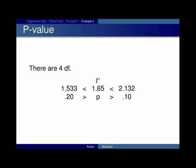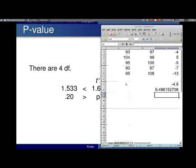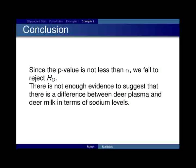Therefore, our p-value is between 0.2 and 0.10. Again, testing at alpha 0.05, since the p-value is not less than alpha, we fail to reject H0. There's not enough evidence to suggest there's a difference between deer plasma and deer milk in terms of sodium levels.